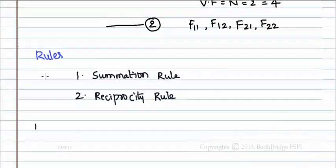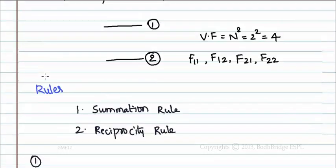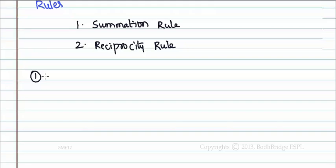The summation rule says the summation of the view factors of one surface with respect to all other surfaces is always equal to 1. That is, in the above example, the summation of view factors of the first surface with respect to first and second surface is always equal to 1. That is, f11 plus f12 equals 1.